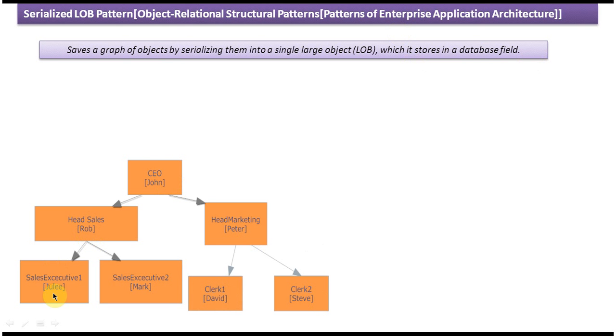Under Rob, there are two more persons working: Julie and Mark, both are sales executives. And under Peter, two more persons are working: David and Steve, both are clerks.